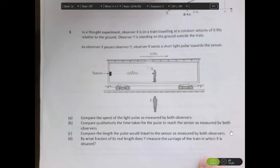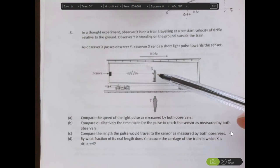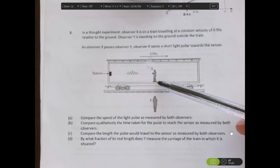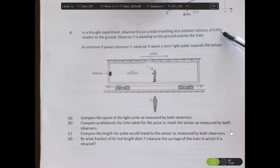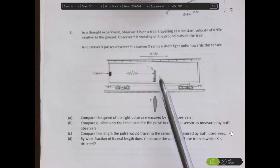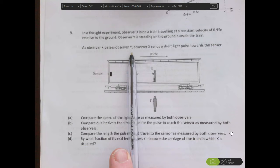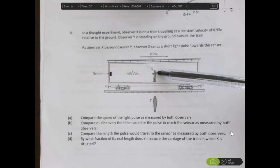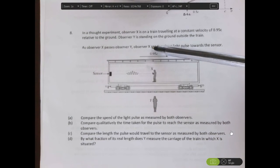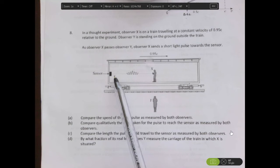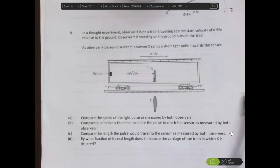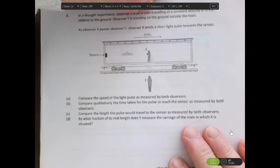Let's now look at question 8. Question 8 is hopping to one of Einstein's thought experiments where we have an observer X in the center of a carriage here on a train and it's traveling at 0.95c or 95% of the speed of light. We also have an observer out here standing on the ground outside the train. And as observer X passes observer Y, in other words when these two become coincidental, X will send a pulse of light to the sensor over here. So let's go through each of the questions.